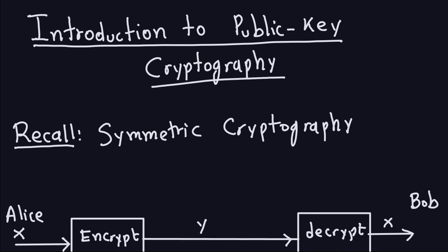Hello and welcome again. In this sequence of videos we're going to start a new topic which is an introduction to public key cryptography, which actually differs from what we have been seeing so far. I'll explain the difference in a second. Public key cryptography is also known as asymmetric cryptography. All the things we have been doing up to now are symmetric cryptography, so let's recall that before we go into the details of asymmetric cryptography.